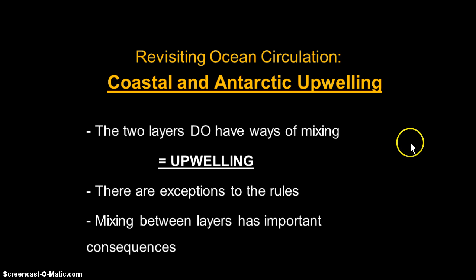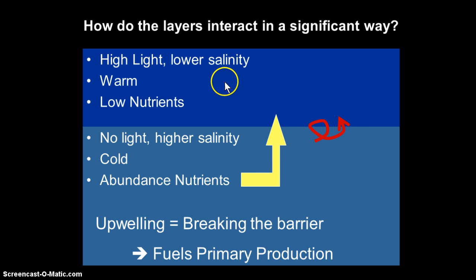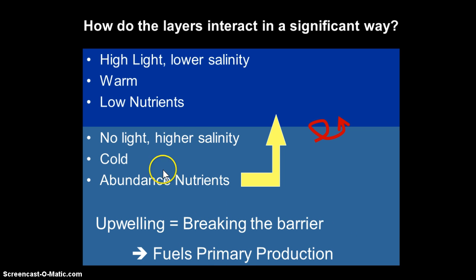similar to the way we did with equatorial upwelling. Let's remember that the point of upwelling, or the important consequence of upwelling, is that we're removing this barrier — this stratification of the two layers — so that water from deep can be brought up to the surface. When we bring up water from deep to the surface, we bring with it all the fuels we need for primary productivity. The biggest thing is the excess nutrients we find in deep water, but also things like oxygen and carbon dioxide.